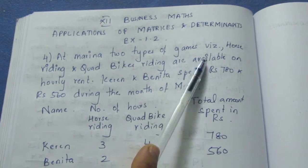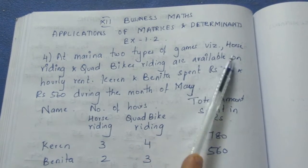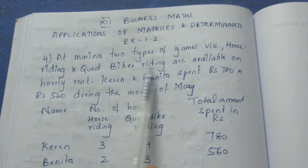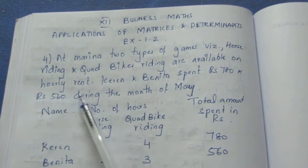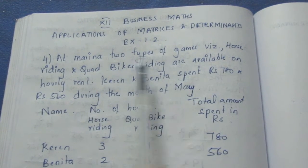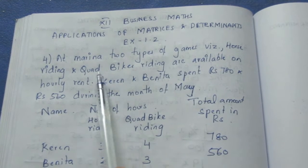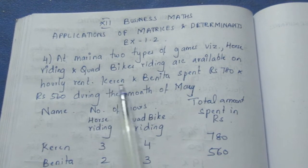At Marina, two types of games, namely Horse Riding and Quad Bike Riding, are available on hourly rental. So in Marina Beach there are two rides. One is Horse Riding, the other is Quad Bike Riding.